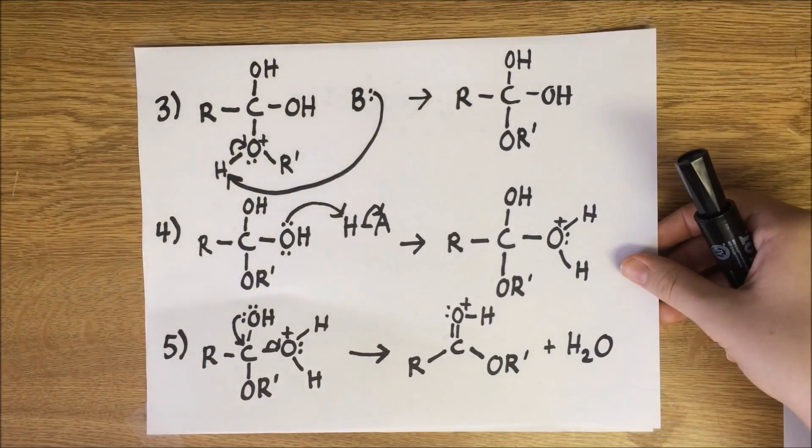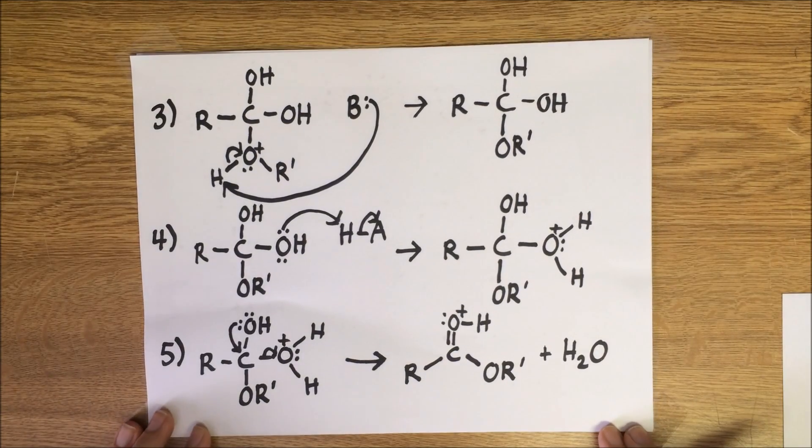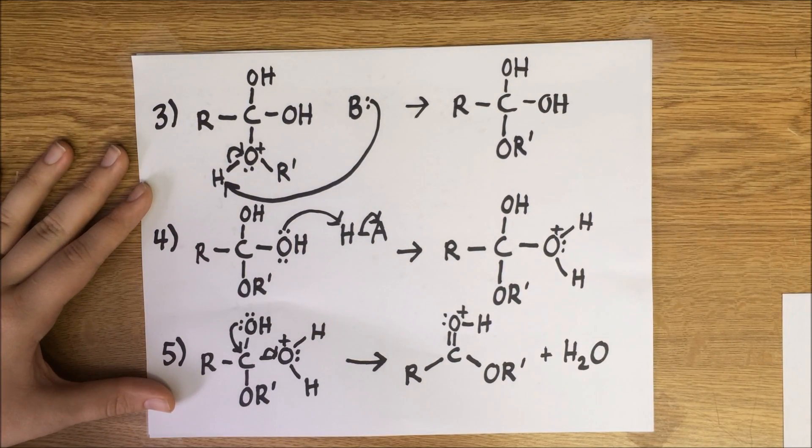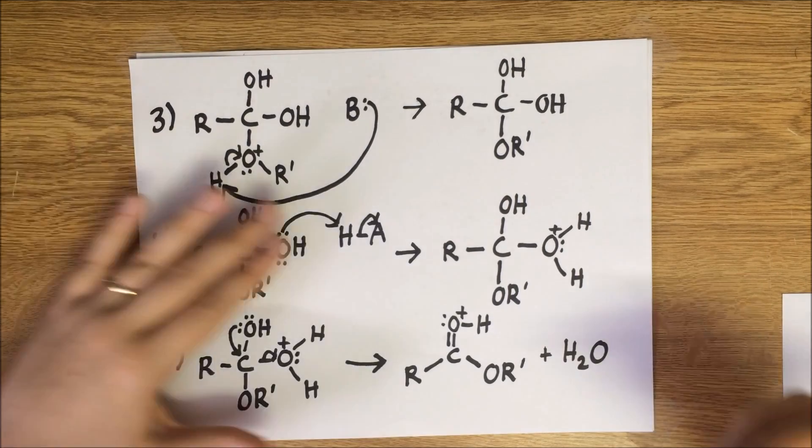We then deprotonate the resulting oxonium with a base before protonating one of the alcohol groups with acid. We eject water as the leaving group, returning to an sp2 hybridized carbon.